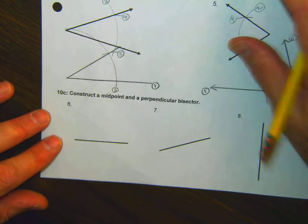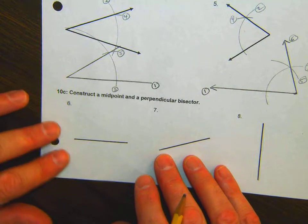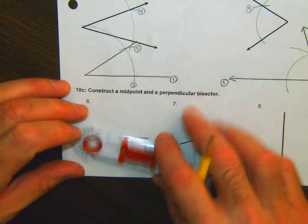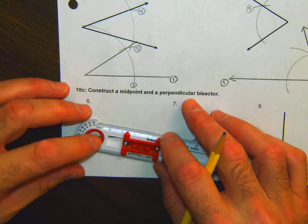Construct a midpoint and a perpendicular bisector. So these, they already have the segment given to you.